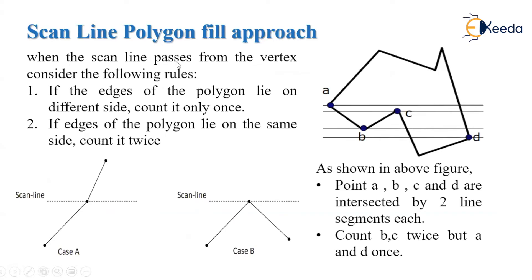When the scanline passes through a vertex, we have to consider two rules. Rule 1: if the edges of the polygon lie on different sides of the vertex, count it only once. Consider case A — here the scanline is passing through the vertex and the edges of the polygon lie on two different sides, so we count this as only one point.